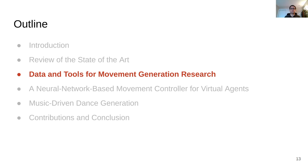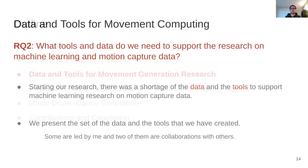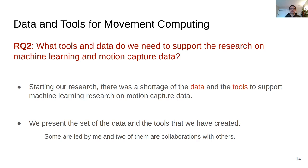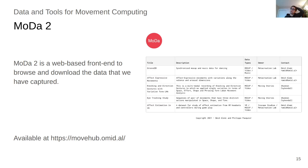Now we are going to talk about the data and the tools for movement generation research. When we started our research, there was a shortage of the type of data we needed for our particular research questions, as well as the tools that would allow us to easily implement and experiment with our ideas. Here we present the set of data and tools that we have created. Some of these projects are led by me, and some are collaborations with others. Moida 2.0 is the second iteration of a web-based front-end to browse and download the data that we have captured. It currently also hosts data from our colleagues, and we intend to expand the data we host going forward.